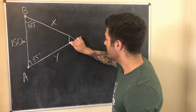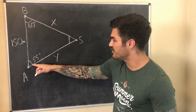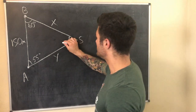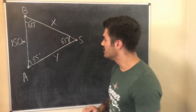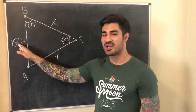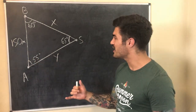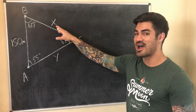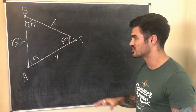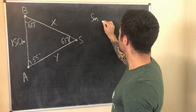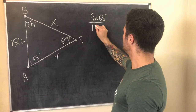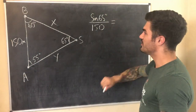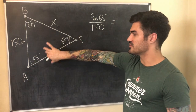Adding the two known angles: 55 plus 60 is 115, and 180 minus 115 is 65 degrees. Now we have an angle across from a known side, so we can use the law of sines. We can write the sine of 65 degrees over 150, and compare it with another known angle over an unknown side. The law of sines works when you have a known angle across from a known side to compare with another angle-side pair.